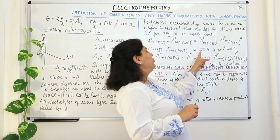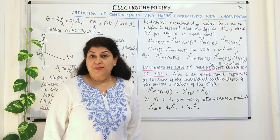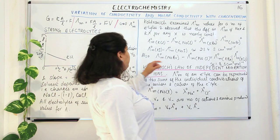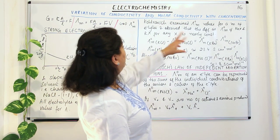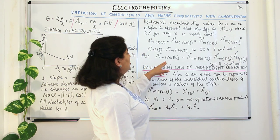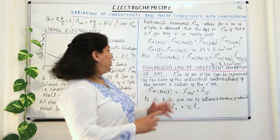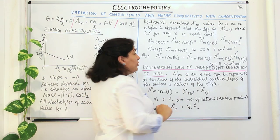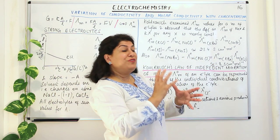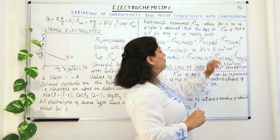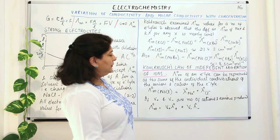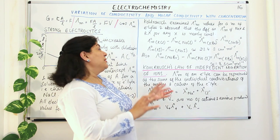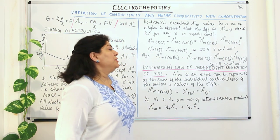Then he carried out the reverse: keeping the cation the same and varying the anion. He took sodium bromide and sodium chloride and found the difference between their limiting molar conductivities was equal to the difference between potassium bromide and potassium chloride — where potassium was common and bromide and chloride are the same pair. Both of these were almost equal to 1.8 S·cm² mol⁻¹.